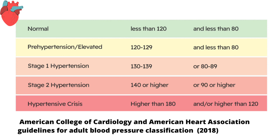Now in Nigeria, we usually consider 120/80 mmHg to be normal. Pre-hypertension, or elevated, is classified as 120 to 129 for systolic blood pressure and less than 80 for diastolic blood pressure.